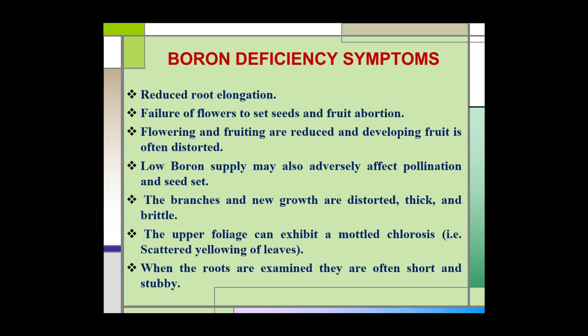Other deficiency symptoms include reduced root elongation, failure of flowers to set seeds, and fruits getting aborted. Flowering and fruiting are reduced and developing fruit is often distorted. Low boron supply may also adversely affect the pollination process and seed set. The branches and new growth are distorted, thick, and brittle.